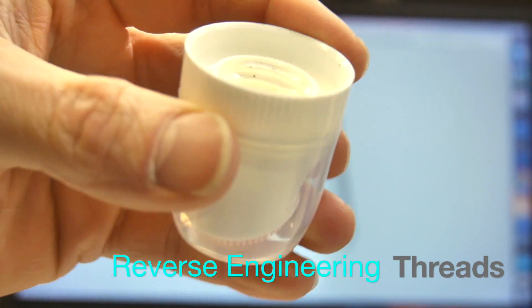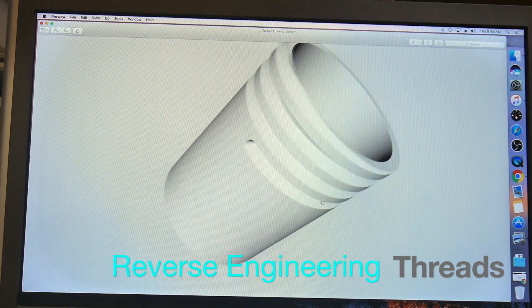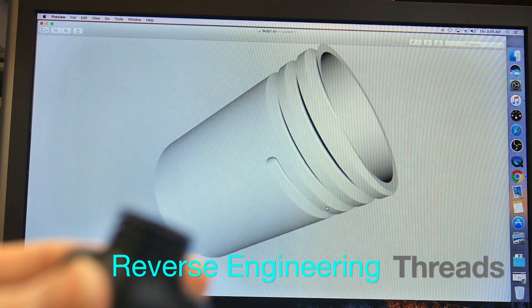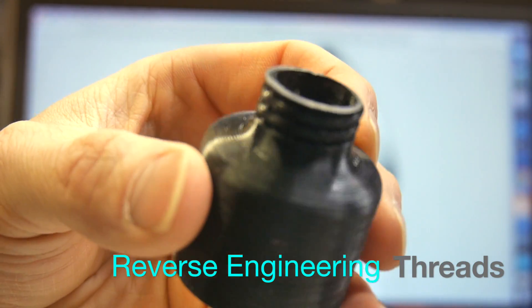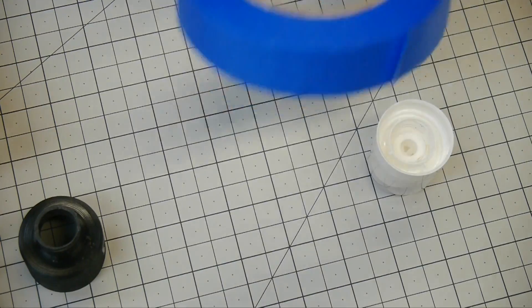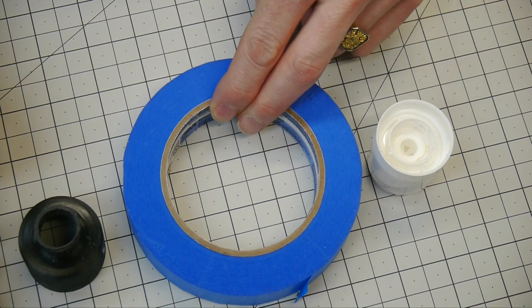How do you figure out the threads on an existing cap so you can create it in CAD and ultimately make a prototype, so you can prove it out before you send it out for production? I'm gonna use some tape, a piece of PVC tubing, and some Johnson's paste wax.